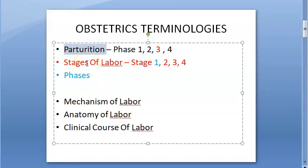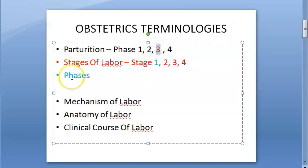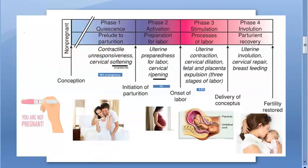So parturition is from the time of conception till the stage of breastfeeding. In that you have four phases: phase one, phase two, phase three, phase four. Phase three is where there is labor — your stages of labor come under phase three of parturition.